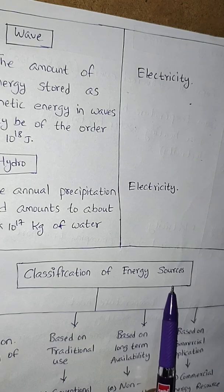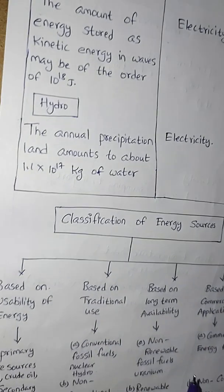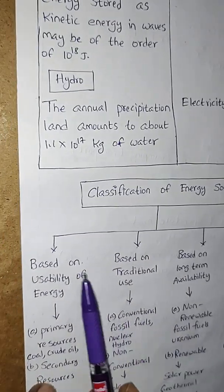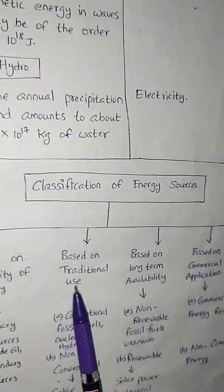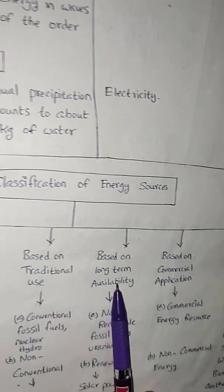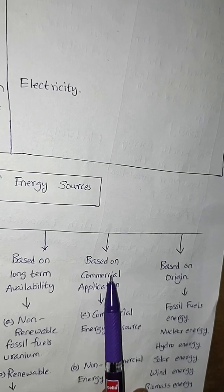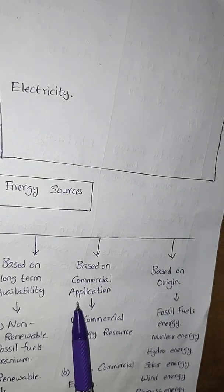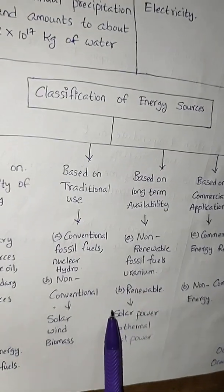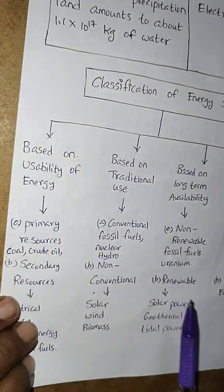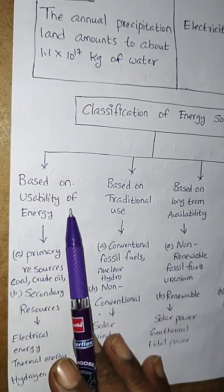The classification of energy sources is based on: usability of energy, traditional use, long-term availability, commercial application, and origin. Under each of these we can find further subdivisions.